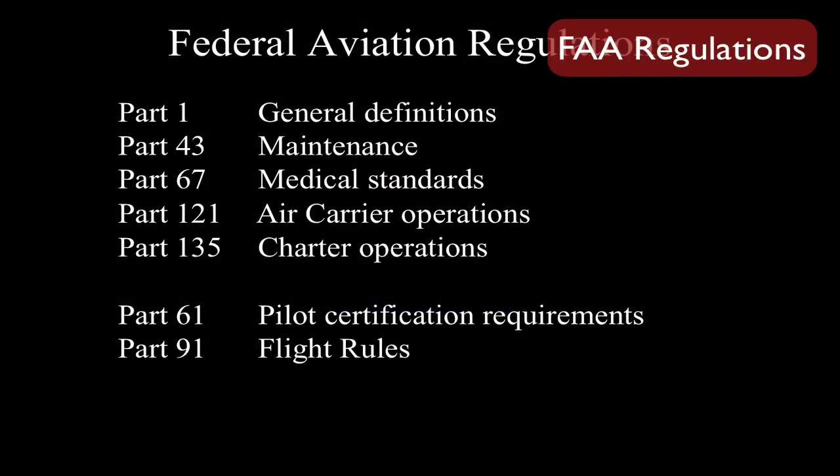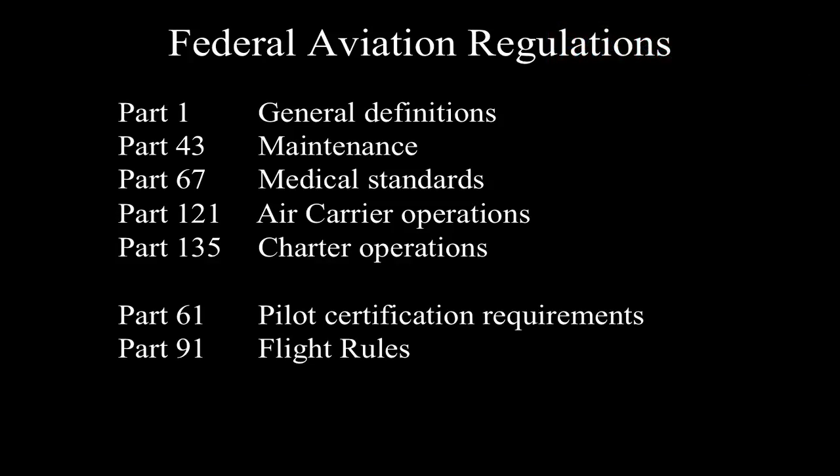The FAA regulations are divided into parts, and there are a lot of them. The book you may have purchased covers just the regulations that pertain to pilots and airmen. Not all of it is applicable to you, so you need to know which parts are relevant. Part 1 is general definitions — it's not very long, but it gives definitions for things like what nighttime is, plus abbreviations and acronyms common in aviation.